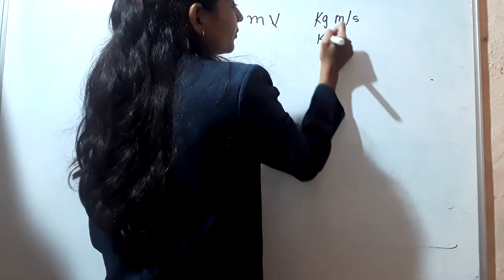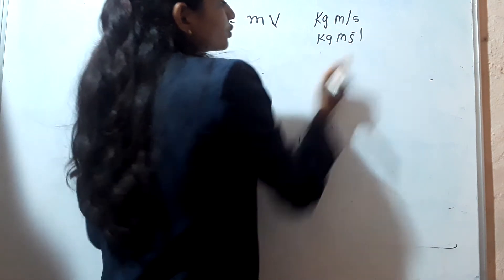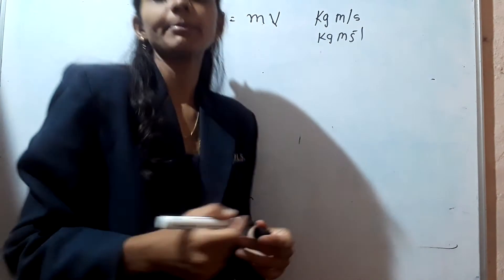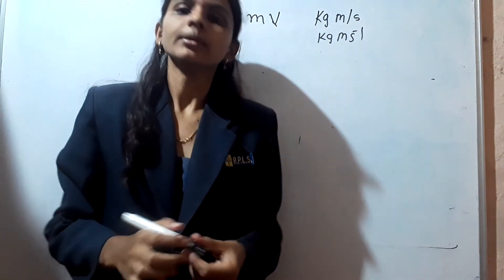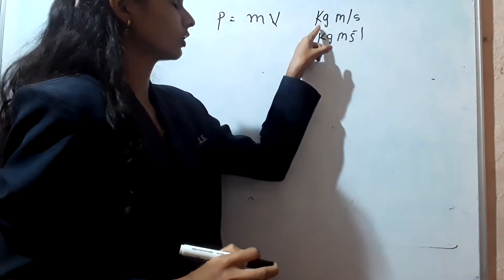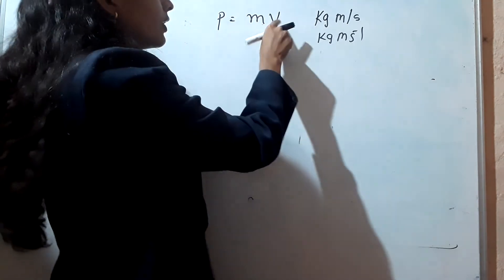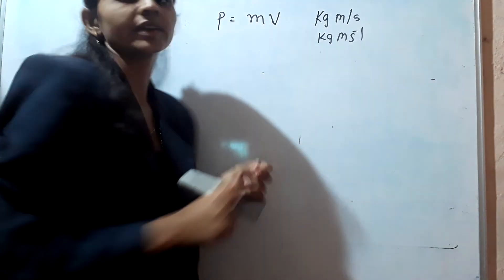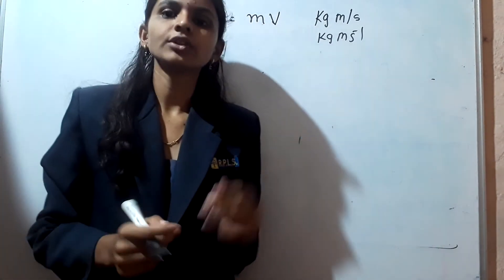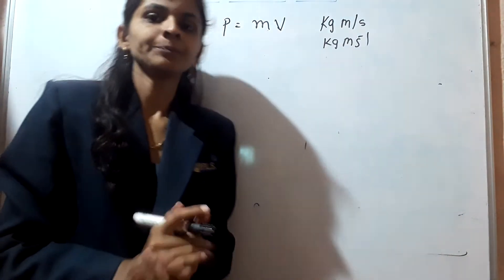You can write it this way also. Why is it kilogram meter per second? Because the unit of mass is kilogram and the unit of velocity is meter per second. That is why the unit of momentum is kilogram meter per second.